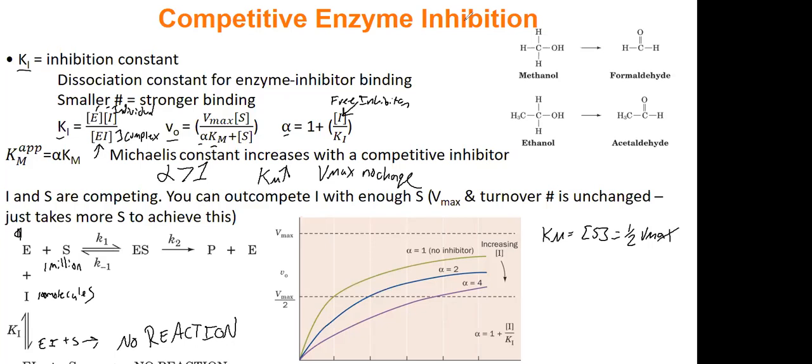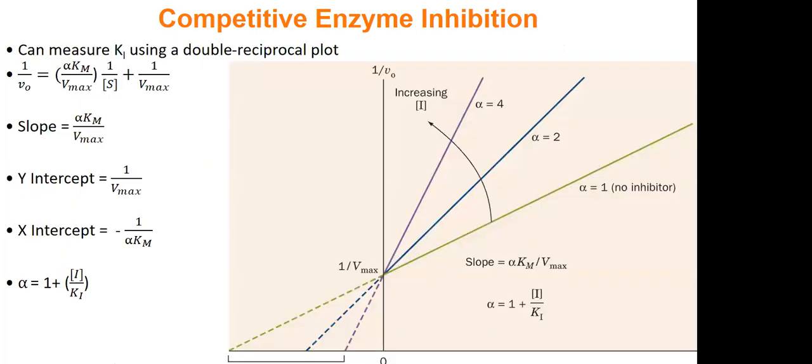So that's why we see no change with Vmax, but an increase with Km. They are competing for the same spot. Alright. Questions about that information? Alright. And what does this look like on a Lineweaver-Burk plot then? So on a Lineweaver-Burk, since Vmax doesn't change, your non-inhibitor, which is this greenish line, and your inhibitor, which are blue and purple, they cross at the same point on the Y-intercept because that's Vmax.